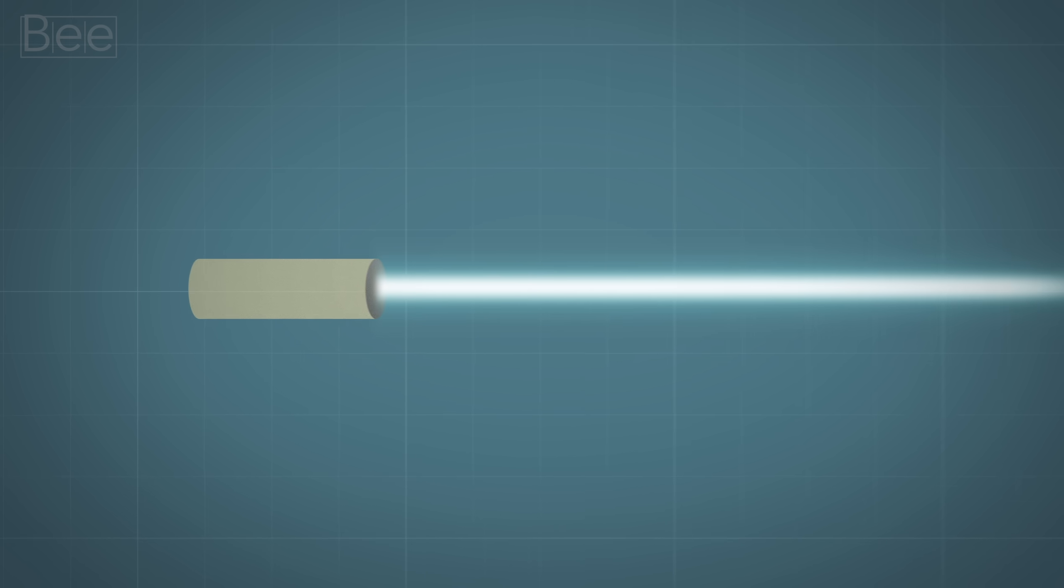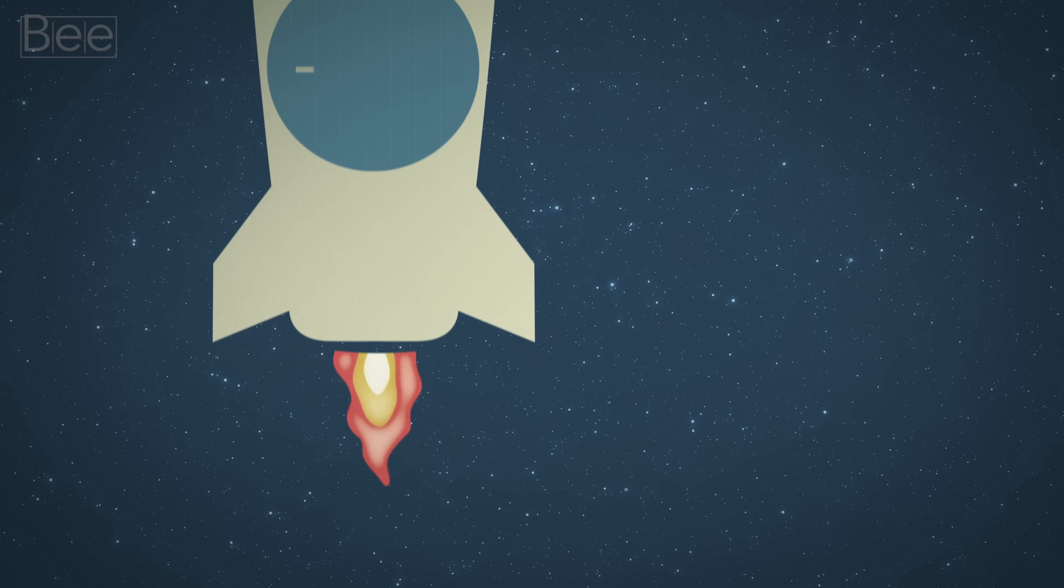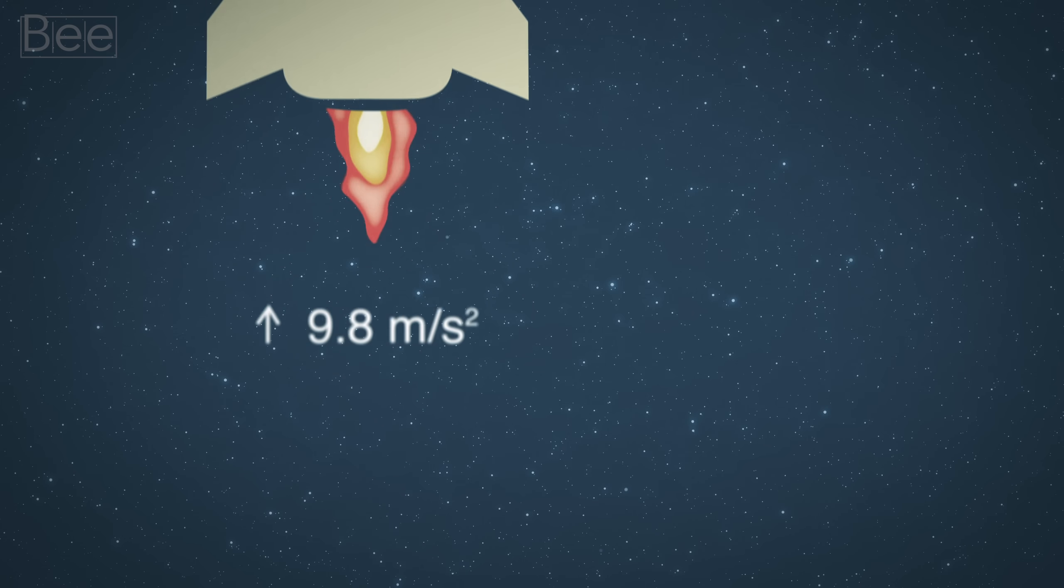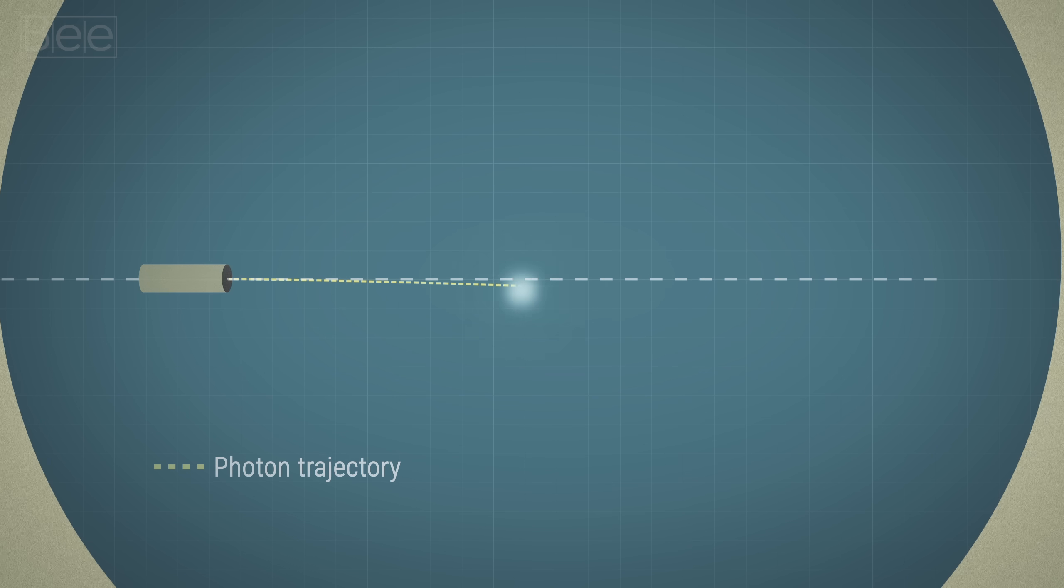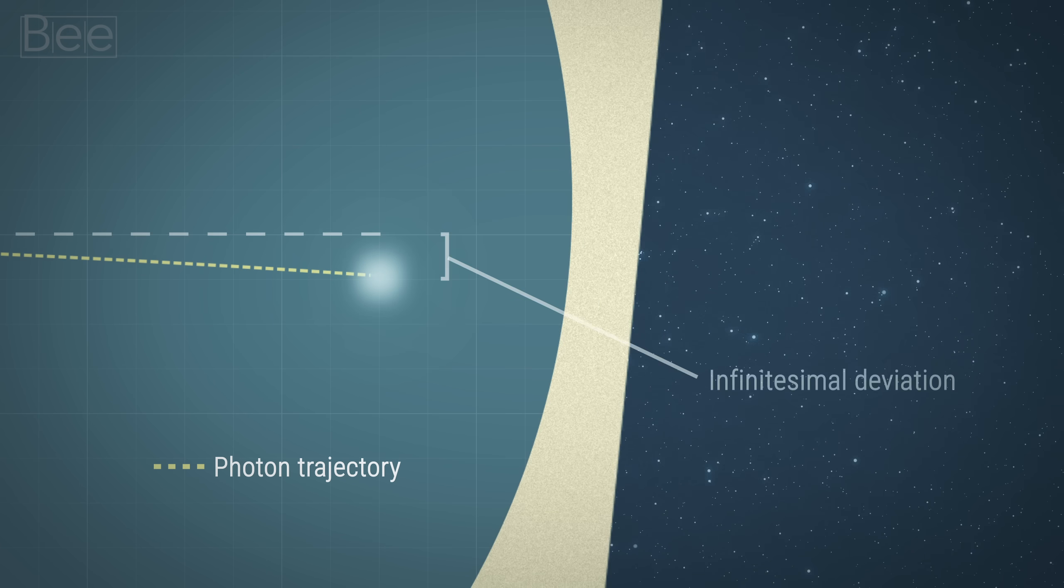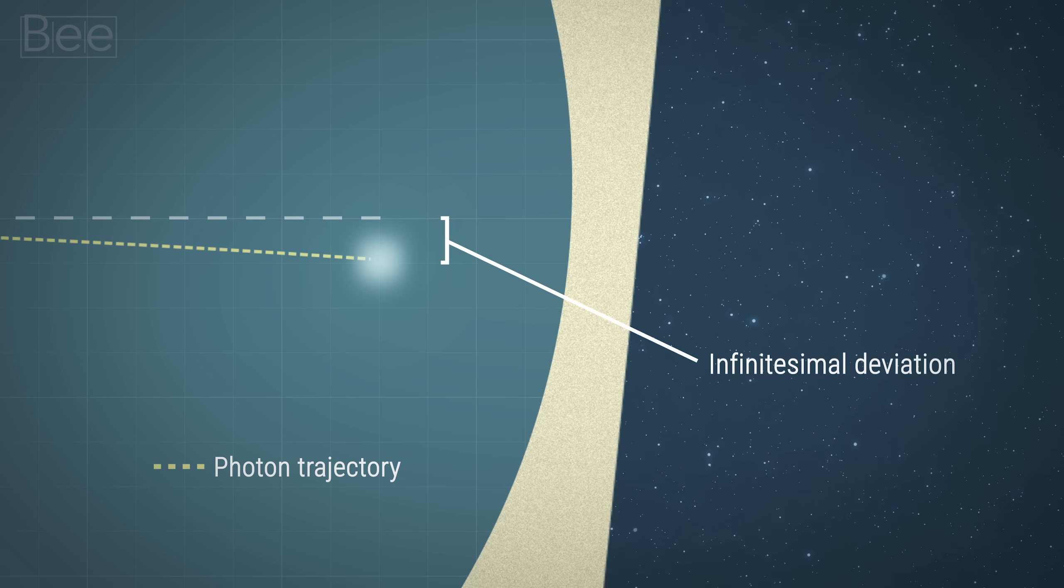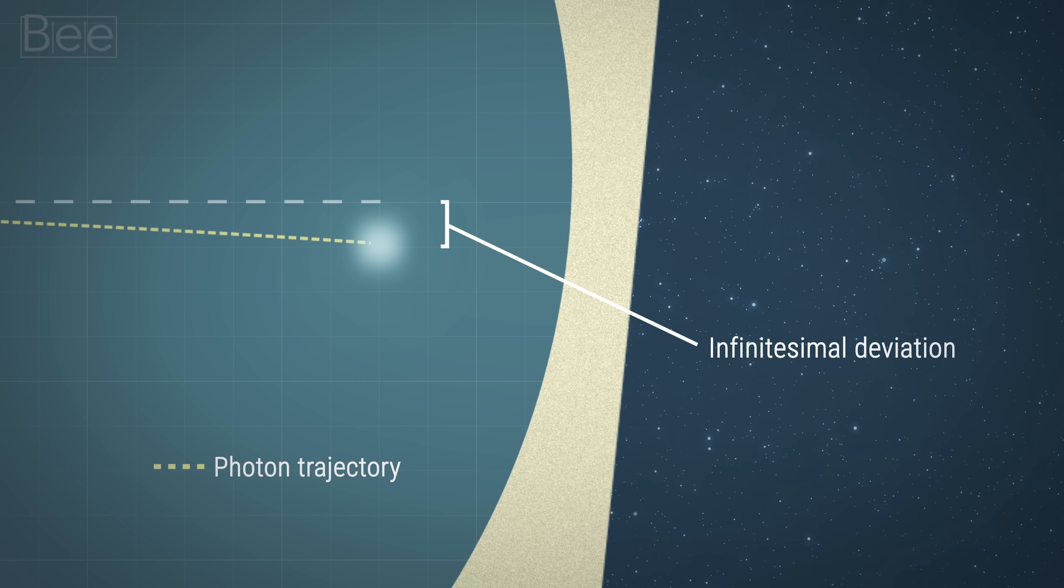He did another thought experiment. This time, he imagined what would happen if he pointed a laser beam from one side of the room towards the other. If the room were in a spaceship that was moving upwards with the same acceleration rate as Earth, the height of the beam would slightly be lower on the other side of the room. As the floor moved up, it curved the light and caused it to bend down.